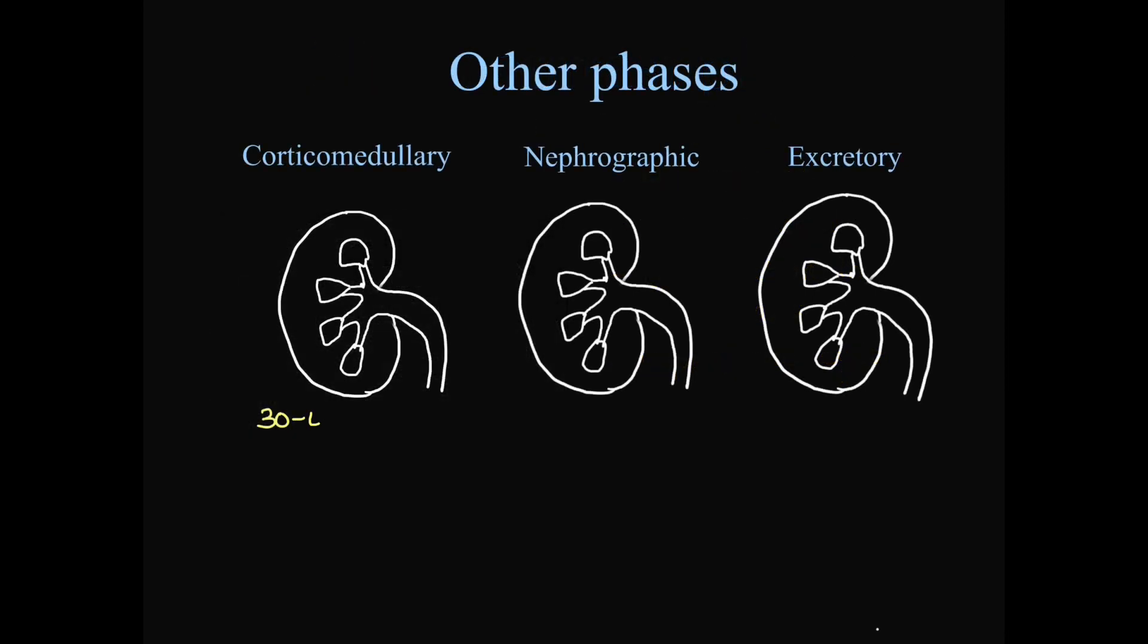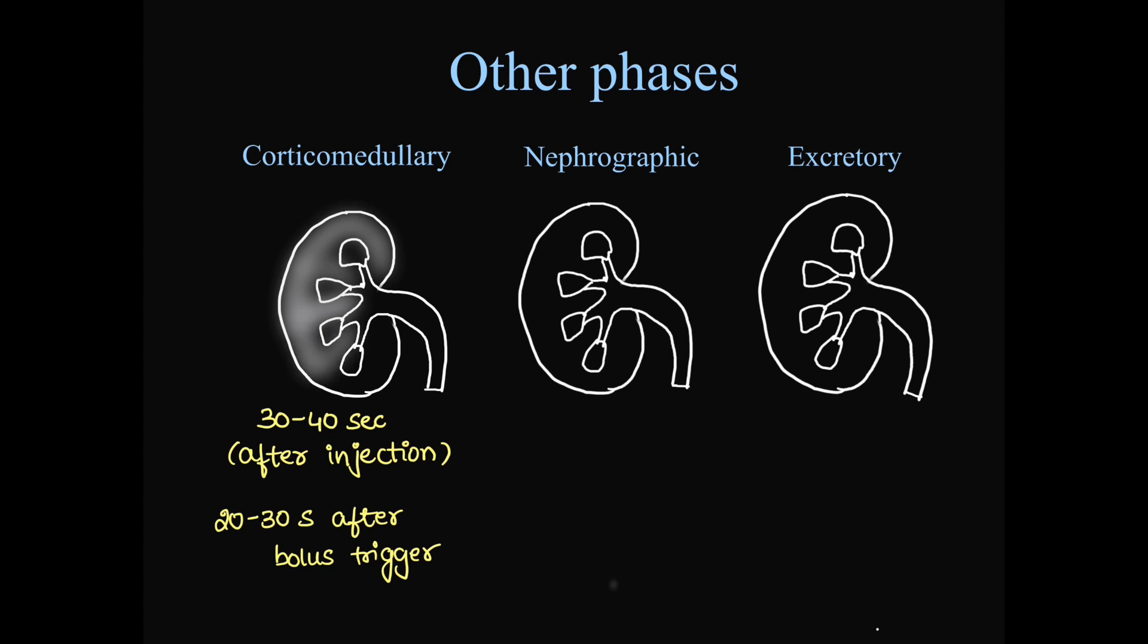Next, we give IV contrast and first we will take the corticomedullary phase at 30 to 40 seconds after injection of the IV contrast. Or if we are using bolus trigger method, then we can take it after 20 to 30 seconds after bolus trigger. In this, the cortex will enhance and the cortex and medulla can be very well differentiated. And also the vascular structure, especially the renal vein is very well enhanced. And we can see any vascular abnormalities in this phase.